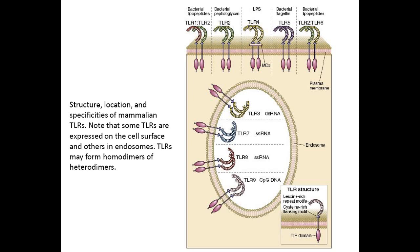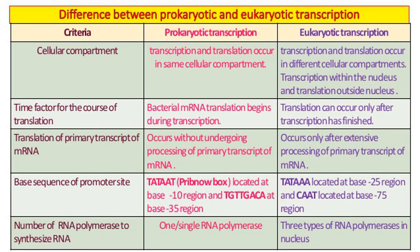Examples of nucleic acids that are TLR ligands are double-stranded RNAs, which make up the genomes of some viruses and are generated during the life cycle of most RNA viruses but are not produced by eukaryotic cells; single-stranded RNAs, distinguished from cellular transcripts by their location within endosomes and high guanosine and uridine content; and unmethylated CpG dinucleotides, which are common in prokaryotes but rare in vertebrate genomes.